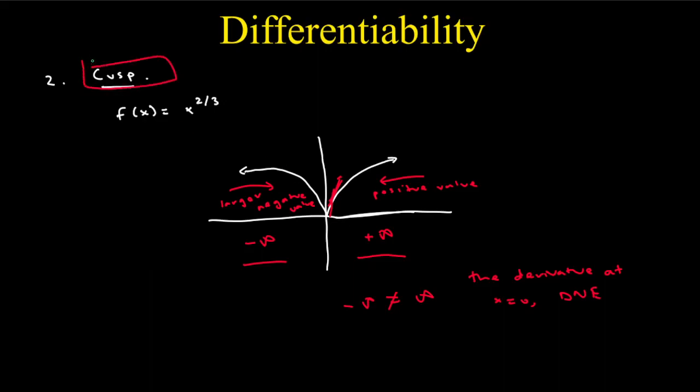Basically, a cusp is like an extreme case of a corner. In the absolute value example, the left-hand derivative was negative one and the right-hand derivative rapidly changed to one. Here with the cusp, it's going from negative infinity all the way to positive infinity as we cross zero. You can imagine the cusp as a more extreme version of the corner — sometimes people just consider it under the corner category.